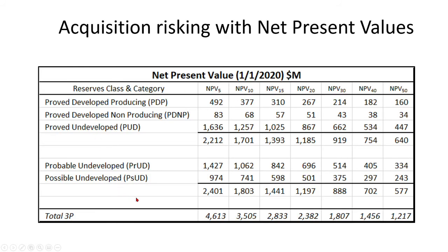Here's an example of an Excel table. This is net present value in thousands of dollars — $1,120,000 — for a project that has producing, non-producing, undeveloped, and probable and possible reserves. Here are the different discount rates at the top: PV5, 10, 15, 20, 30, 40. Here are the discounted values for each of the reserve categories at the different discount rates, all in thousands of dollars. You can add them up to see how it all totals at the bottom.